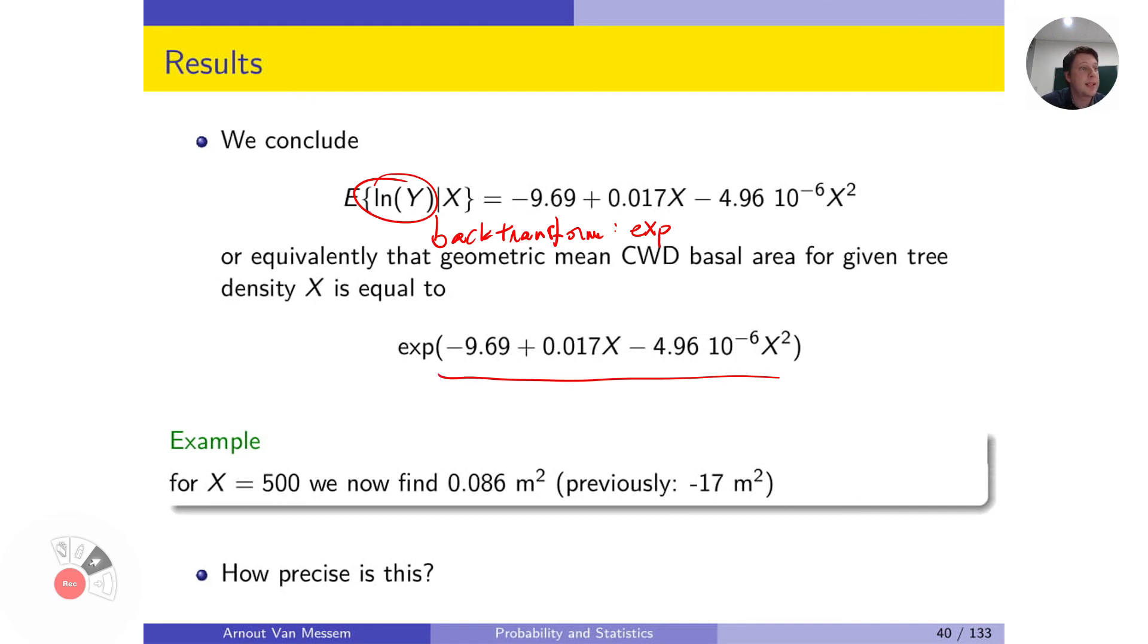If we now look back at the example that caused the problem, so for example we take x equal to 500, we now find a positive value, a very small value, but it's positive, so it makes sense. So we find that if there are 500 trees per kilometer, then the basal area is, on average, 0.086 square meters.